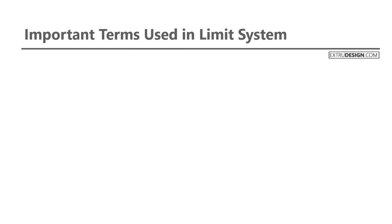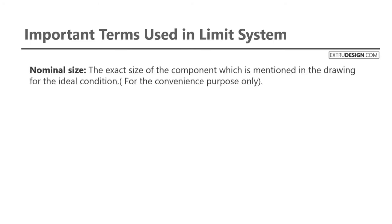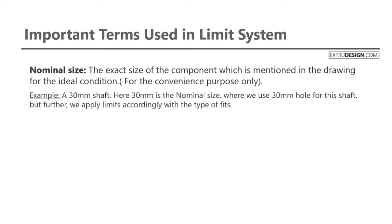The first term is nominal size — the exact size of the component which is mentioned on the drawing for the ideal condition. These nominal sizes are mentioned for convenience purposes only. For example, a 30 mm shaft: here 30 mm is the nominal size, where we use a 30 mm hole for this shaft, but further we apply the limit system according to the type of fit.